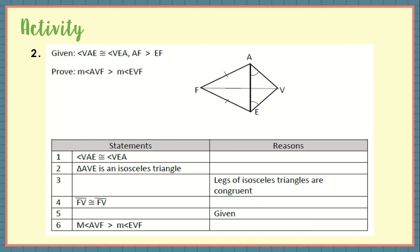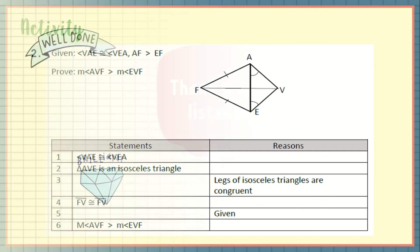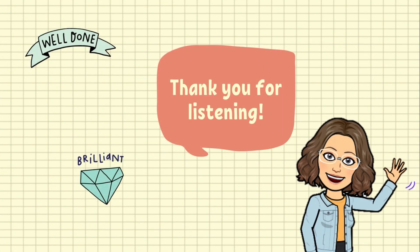Number 2, complete the missing statements from the two-column proof below. Given that angle VAE is congruent to angle VEA and AF is greater than EF, prove that the measure of angle AVF is greater than the measure of angle EVF. And that's all for today. Thank you for your time and effort. I hope you have learned a lot from this lesson. Again, this is Teacher Eliza May Kunanan, your grade 8 mathematics teacher. Thank you and God bless!